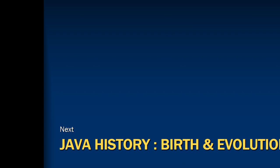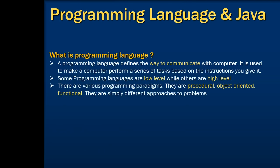Before we begin to talk about Java, let us understand what is a programming language. A programming language defines the way to communicate with the computer. It is used to make a computer perform something by providing it some instructions. Every programming language has its own syntax and constructs which are used to provide programs or instructions to the computer. When one has understood the notation and constructs of a programming language, he or she can start writing programs in that language. It is like once I learn grammar and words of the German language, I can start communicating in that language.